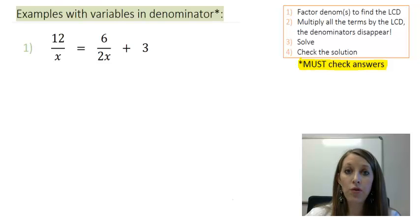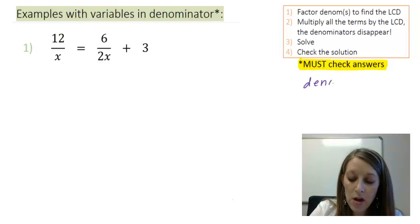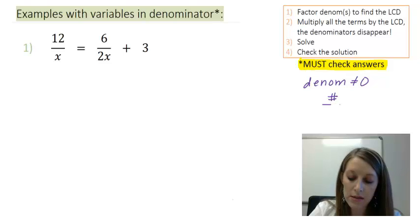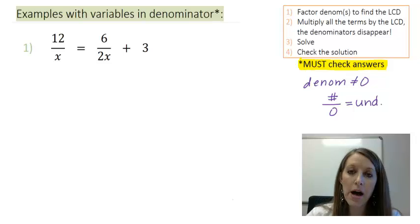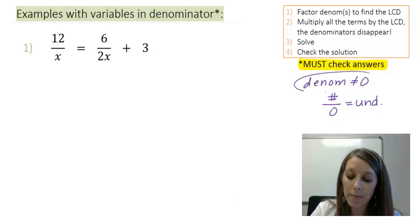I'm not saying that you have to fully check these answers, but we do have to check and make sure that you do not end up with a denominator of zero, because we know that we cannot divide by zero. Anything divided by zero is undefined — it is impossible to calculate. So when we have variables in the denominator, we need to double check to make sure we do not end up with an answer that makes our denominator zero.